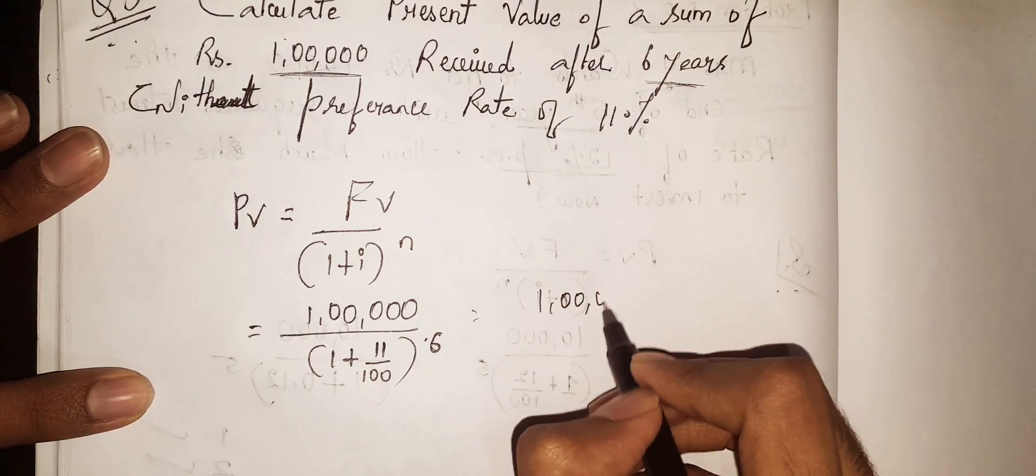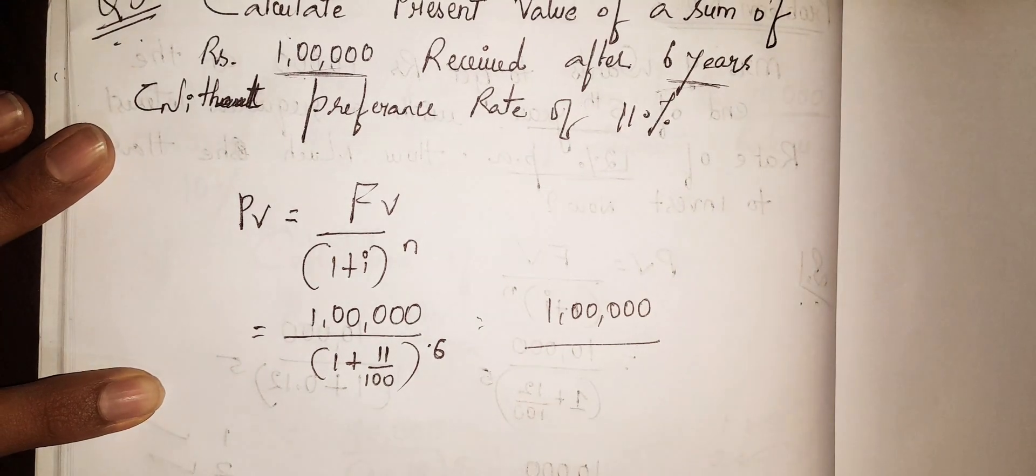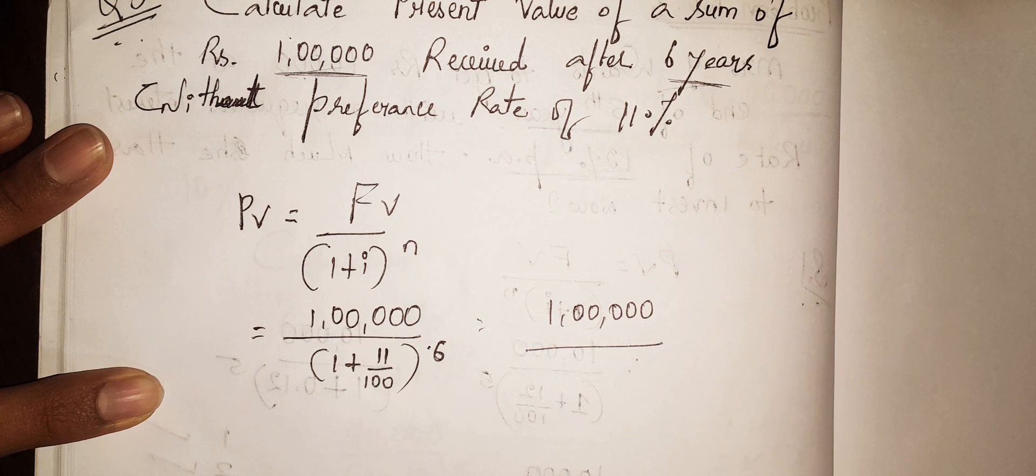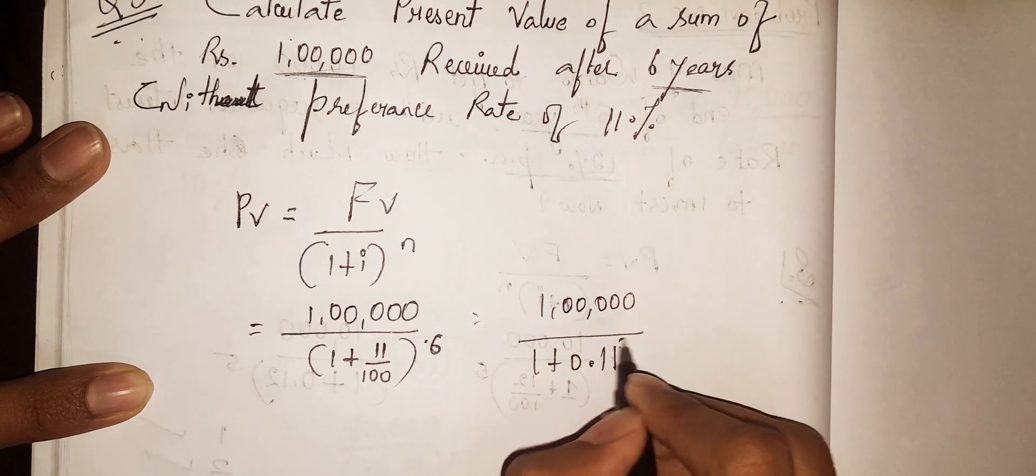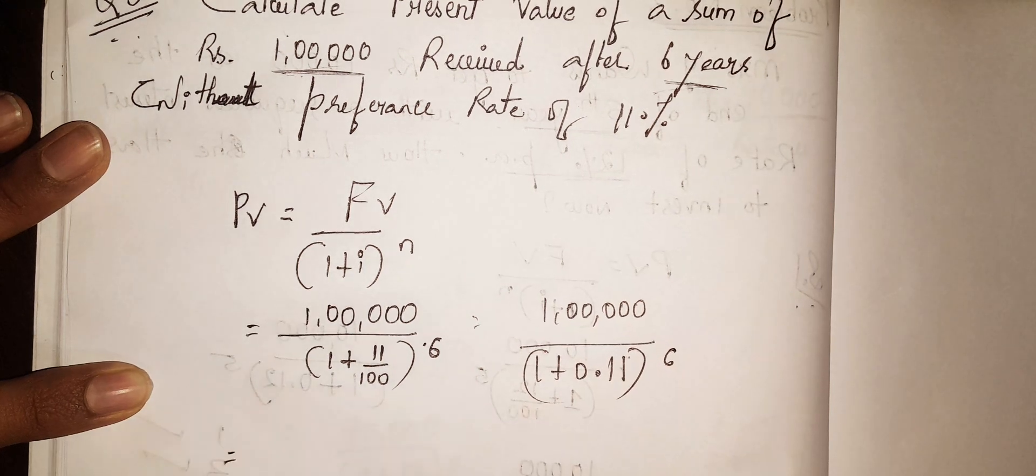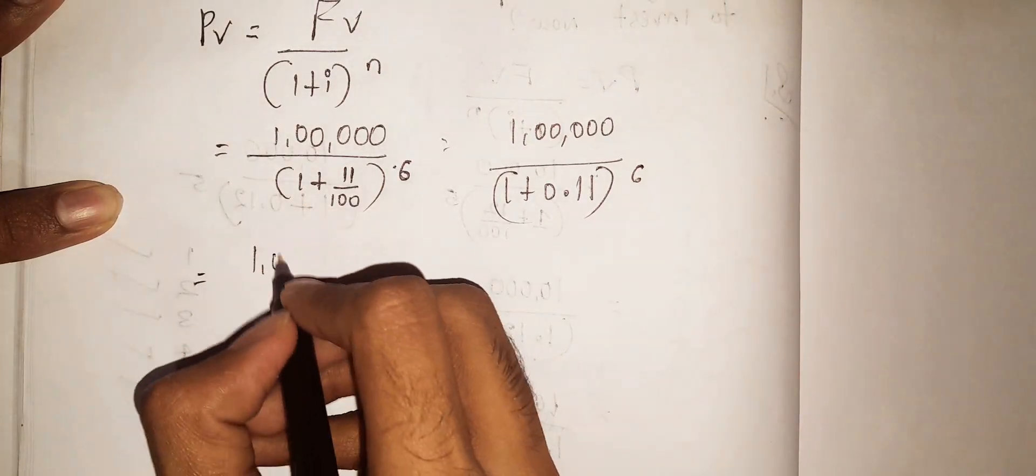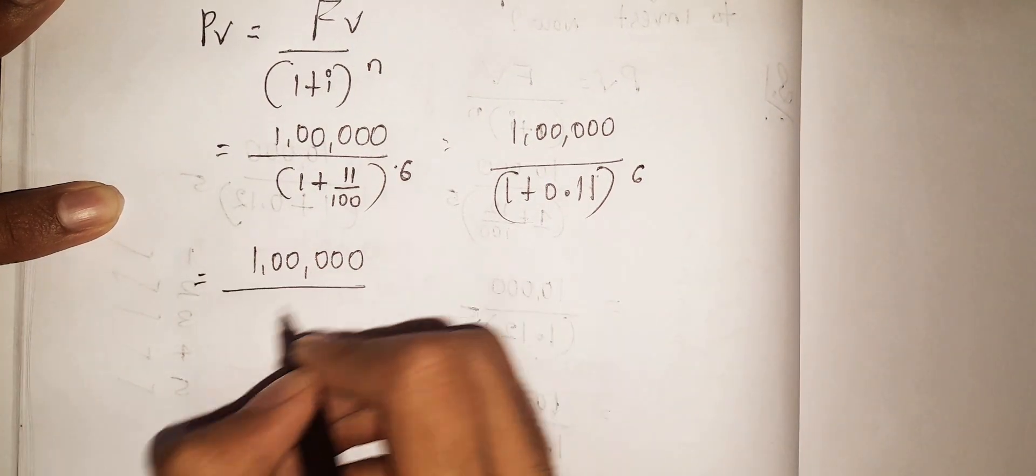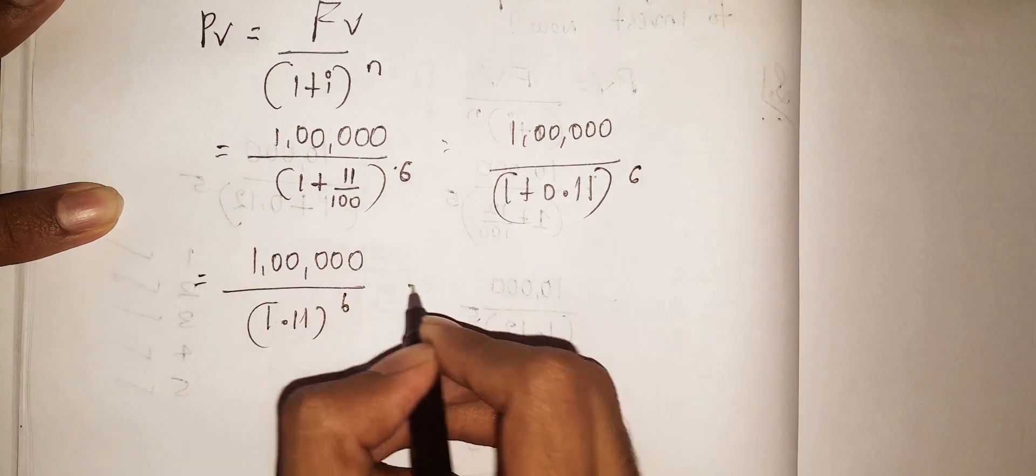So it will be 1 lakh divided by 0.11 to the power of 6. So Rs. 1 lakh divided by 1.11 to the power of 6.